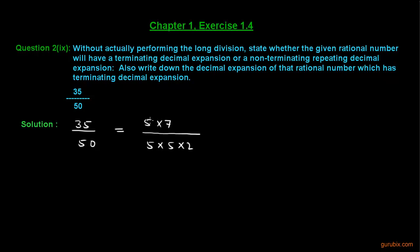is common to both numerator and denominator, so we can cancel out this 5 from here and this 5 from here. What remains is 7 over 5×2.